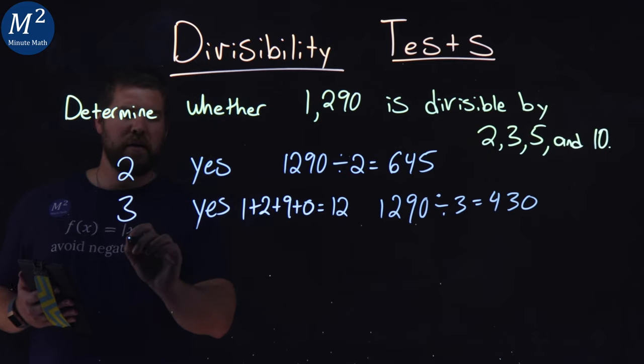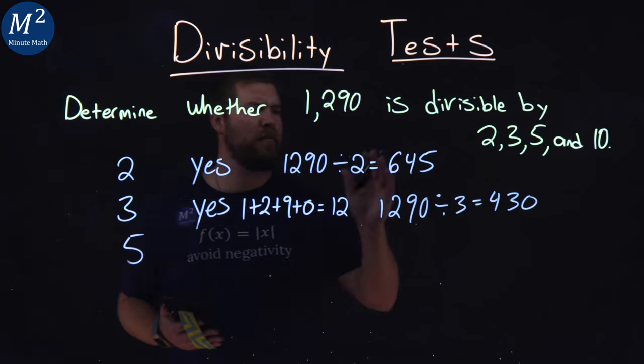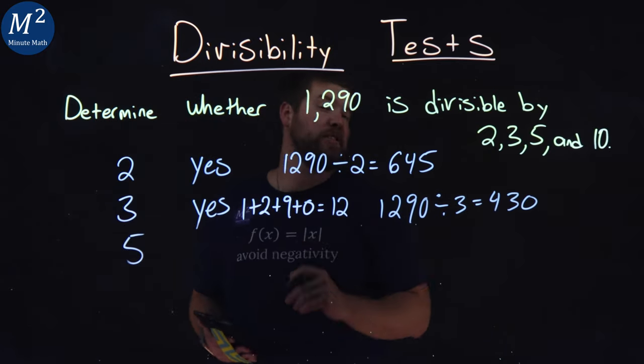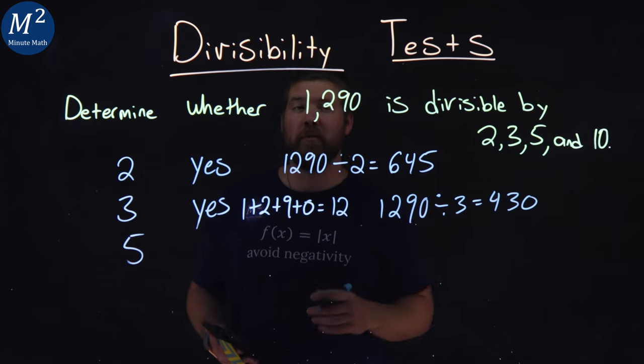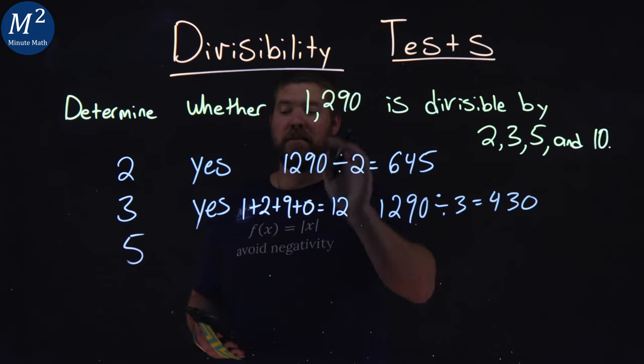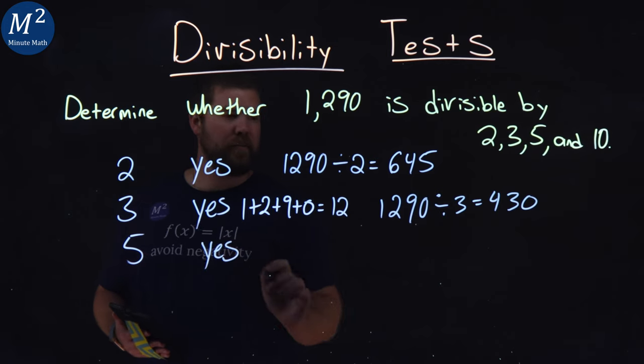What about 5? If the last digit ends in 0 or 5, it's divisible by 5. This case is 0, so yes, it is.